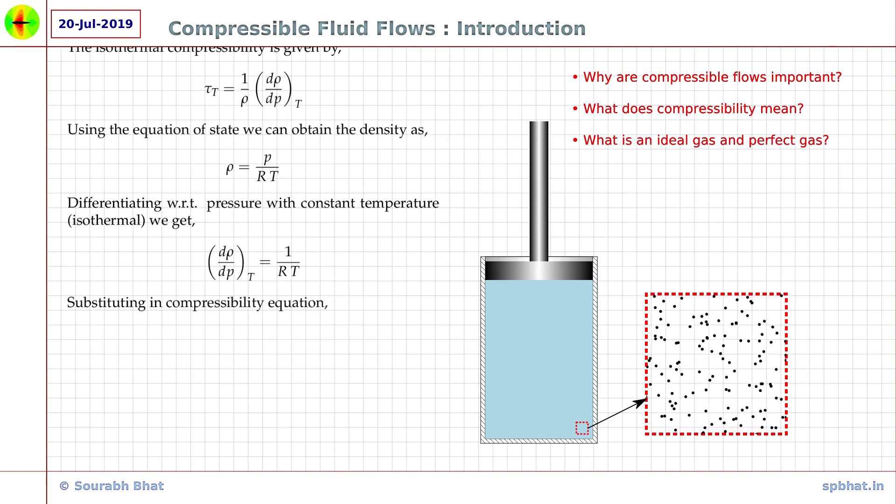Substituting the above equation, we get tau is equal to 1 over RT. We can cancel out RT and we will be left with tau is equal to 1 over p. At a pressure of 1 atm, the isothermal compressibility can therefore be calculated as tau is equal to 1 over 101325, which is approximately equal to 1 into 10 raised to minus 5 meter square per newton.